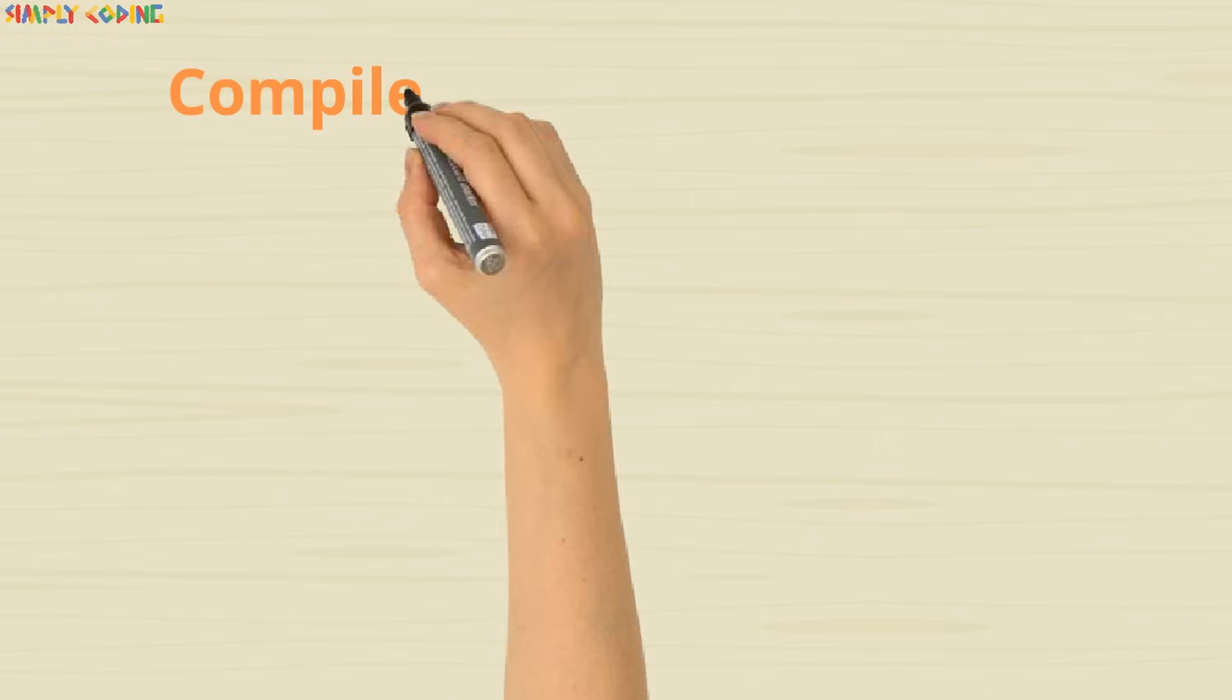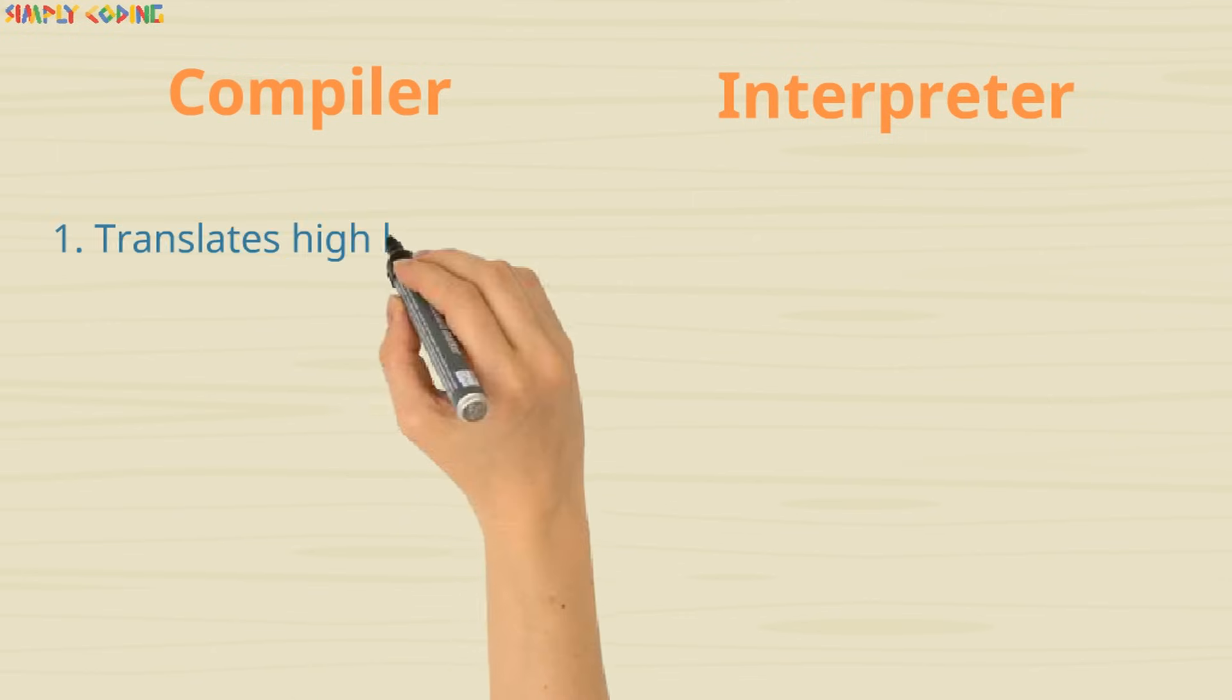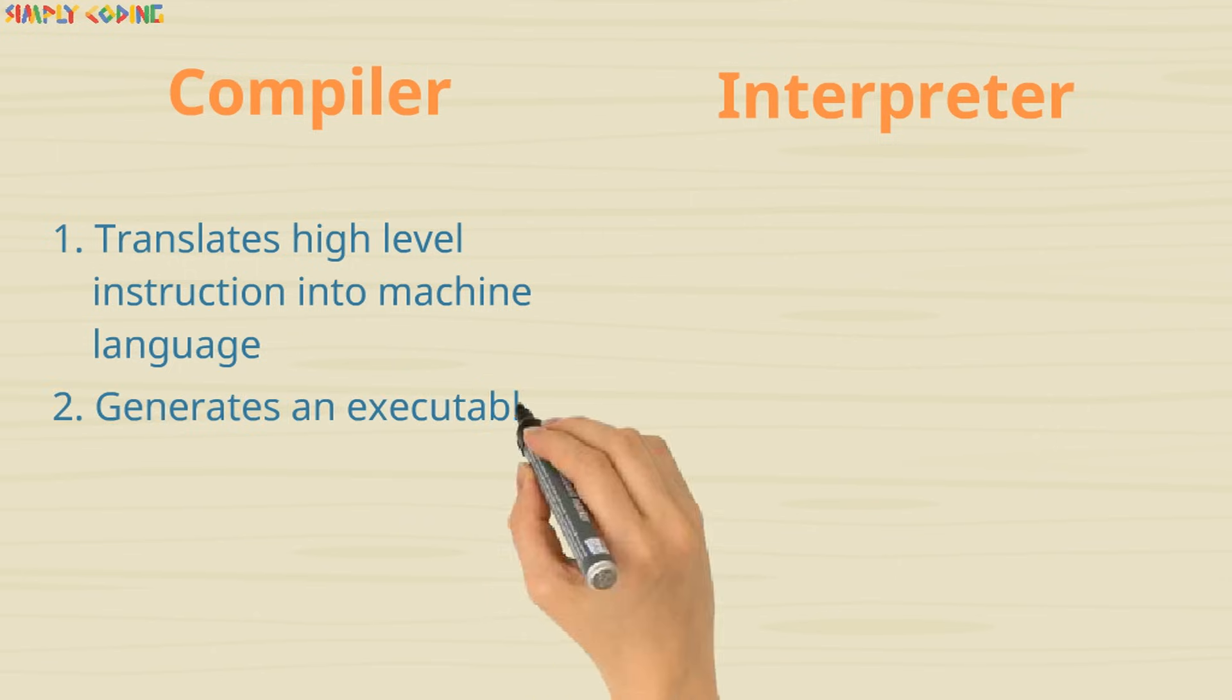A code in high level language needs a compiler or interpreter to convert their code into machine language. Let's understand the difference between the two. The compiler translates the high level instructions into a machine language and generates an executable file like .exe.